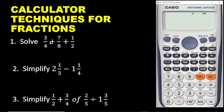We want to enter this on it. So, 3 over 4 — remember, this is a fraction. So you first press the fraction button and then you enter 3 over 4. So 3 is entered, you press the down key to go down, and then we press 4. So we finish with this.